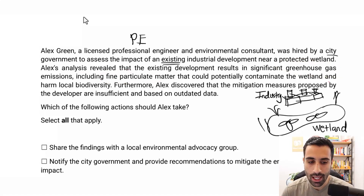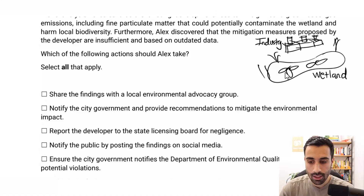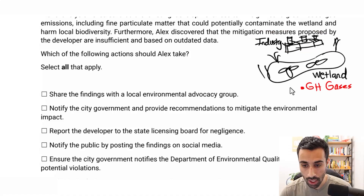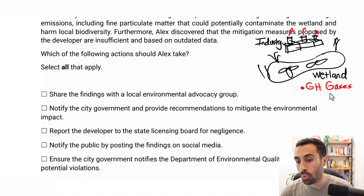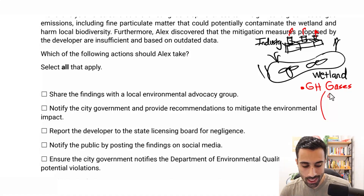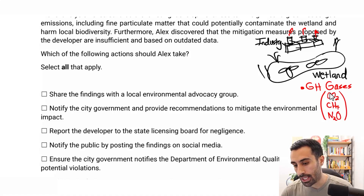That is the core problem or dilemma we have to ethically think about. The first issue is greenhouse gas emissions from the industrial development. As engineers, we should know the big three greenhouse gases: CO2 (carbon dioxide), CH4 (methane), and N2O (nitrous oxide). CO2 is the most common.